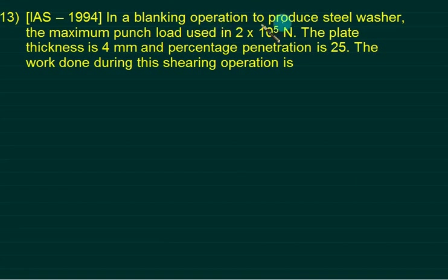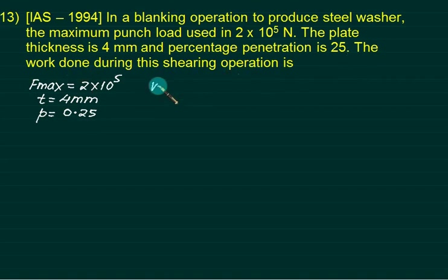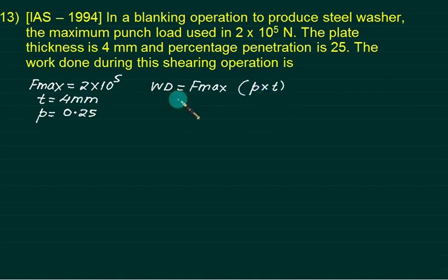Example: In a blanking operation, F_max = 2×10⁵ N, plate thickness = 4 mm, penetration = 25%. Work done = F_max × p × t = 2×10⁵ × 0.25 × (4/1000) = 200 N·m. Divide by 1000 to convert mm to meters.